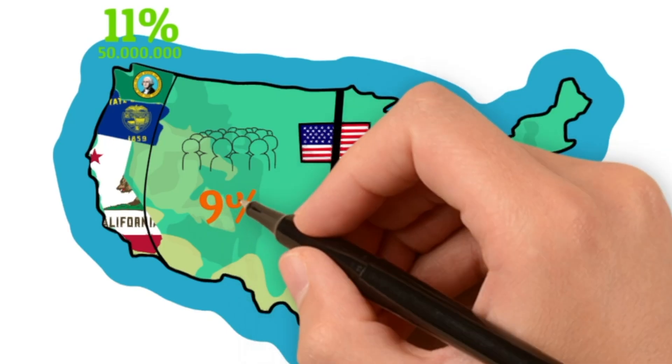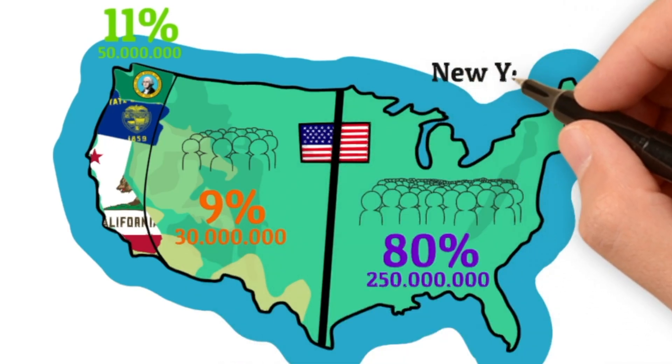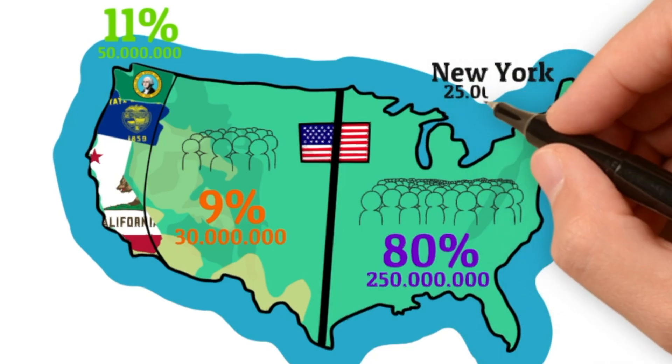Thus, only 9% of Americans live in half of the mainland of the U.S., which is equivalent to the population of New York City alone. Why is that?